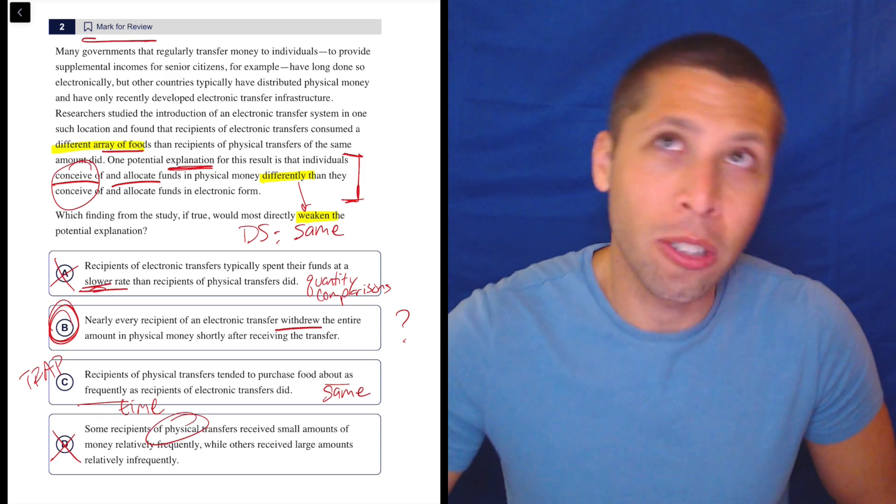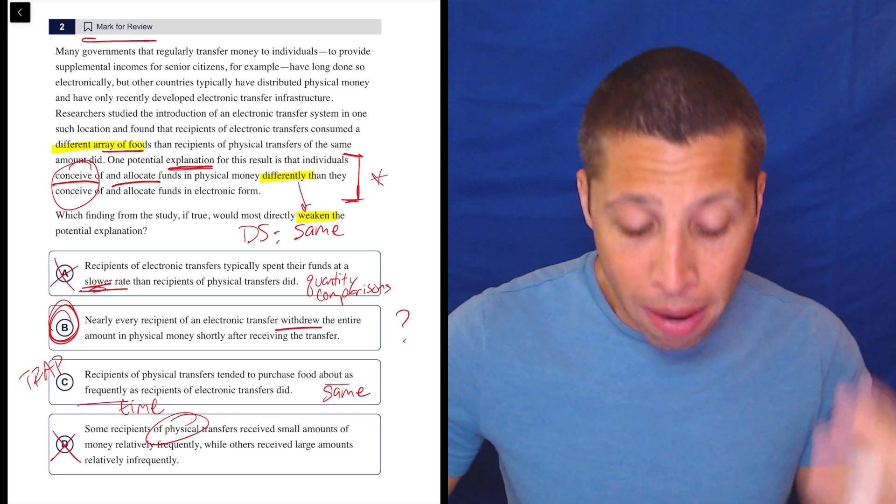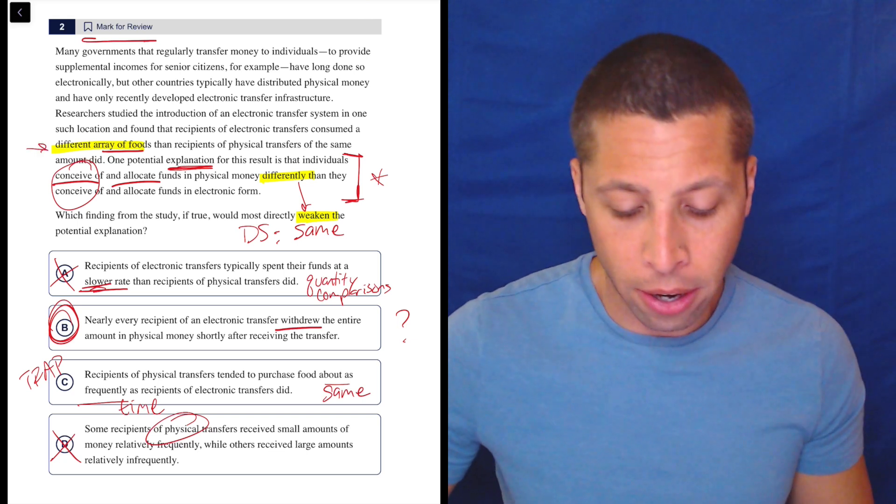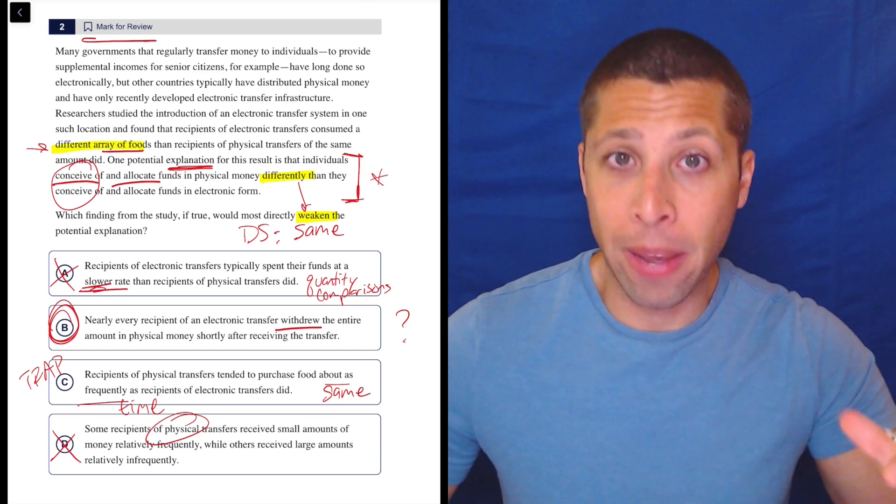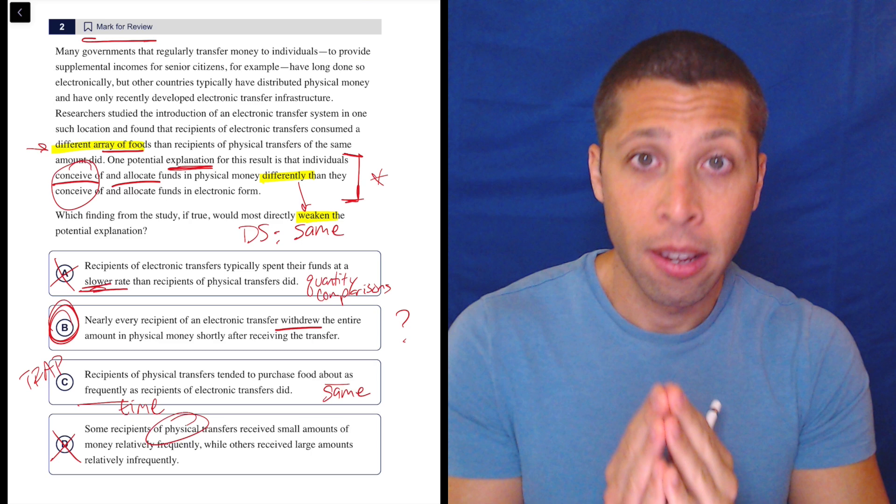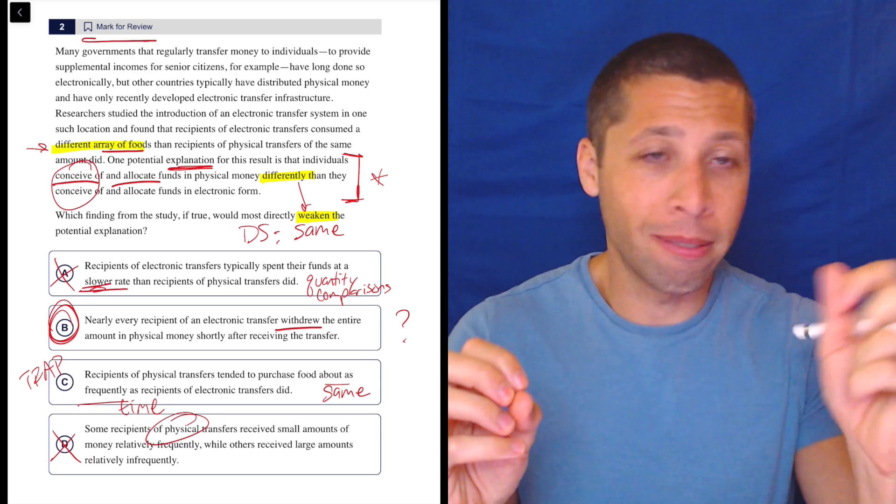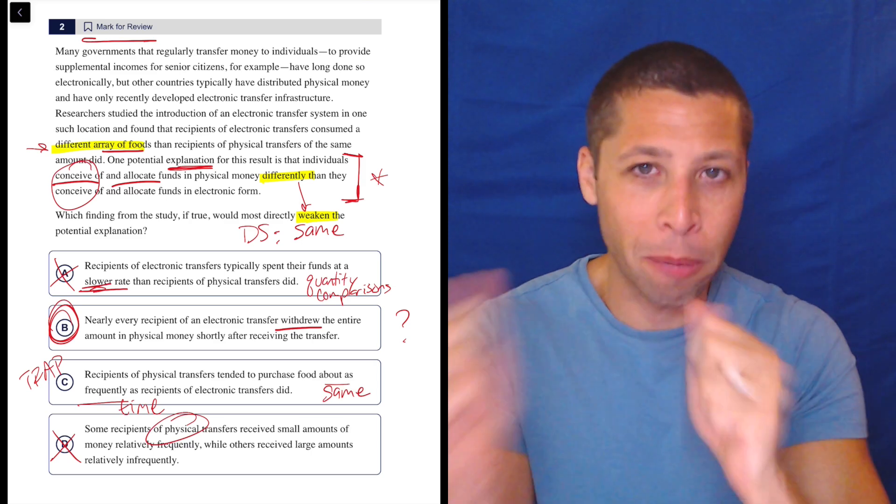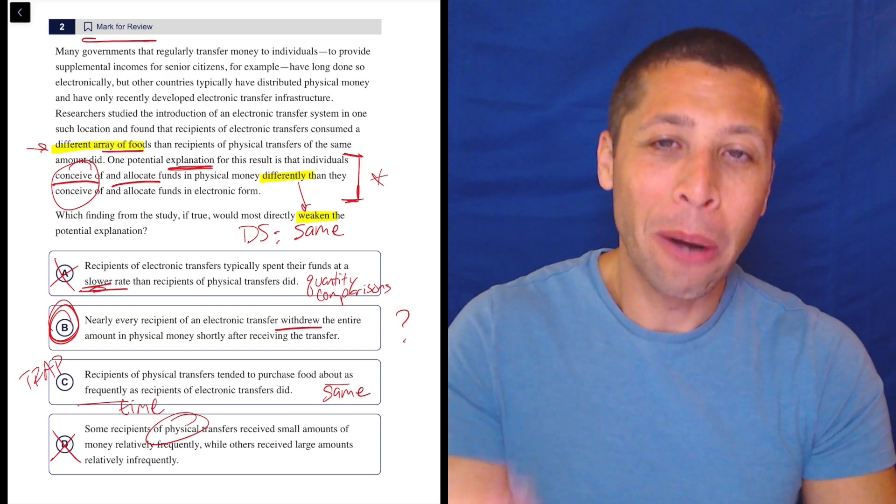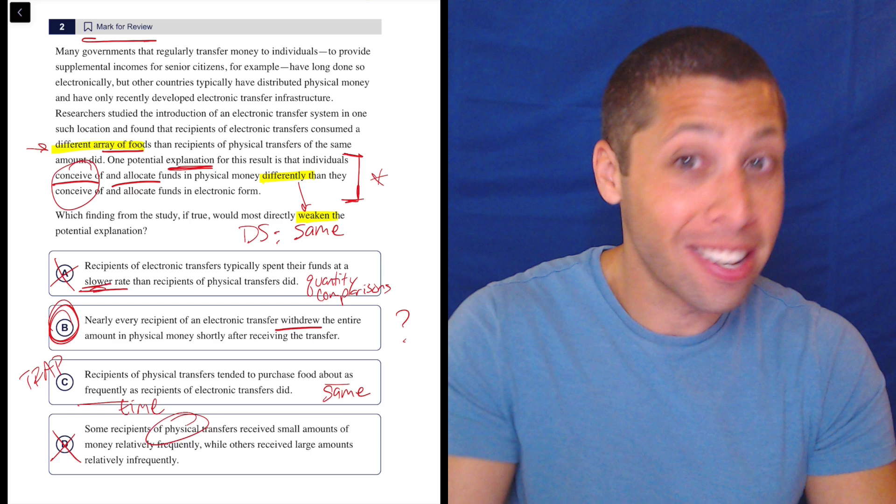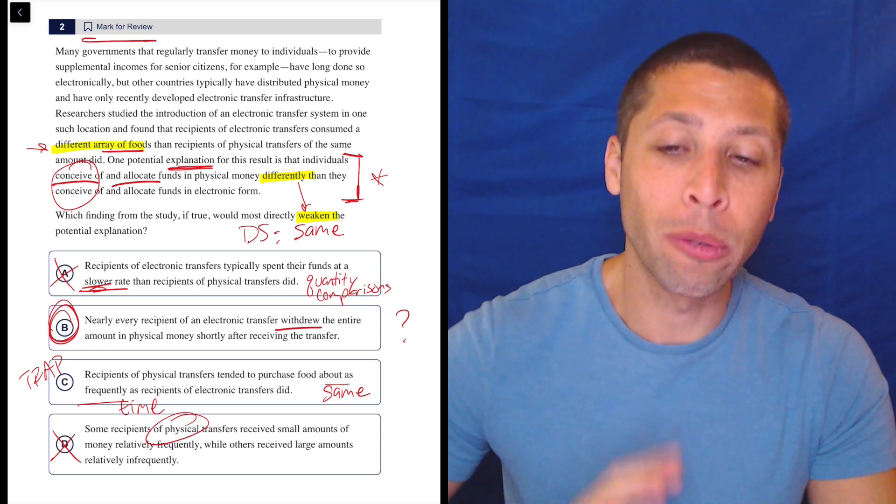So that would weaken the explanation in the passage because then there is no difference between the way they conceive of, think about money. It's all money. Now, again, I still feel like C is close, but the other thing I think I'm not necessarily considering is that we're supposed to weaken the explanation. So again, this comes down to the last sentence. Maybe in my mind, the problem is I'm trying to also weaken this part here, that they're spending the money in different ways and buying different foods. That part is not up for debate, according to the passage. That part is true. We have this finding. They are getting different kinds of money, and some of them are buying, you know, I don't know, potatoes and turnips, and others are buying, I don't know, Doritos. Who cares? It doesn't matter. They're buying different things.